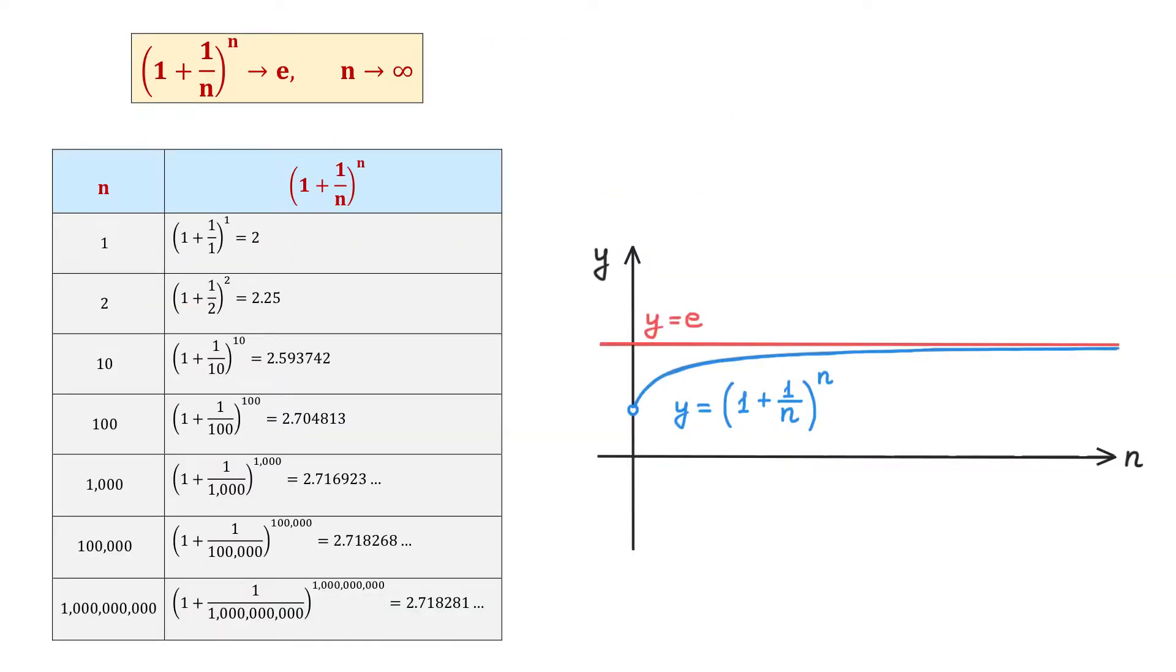Now, number e can be calculated using different methods. In one of these methods, e is defined as the value of the expression 1 plus 1 over n to the n's power when n approaches infinity.